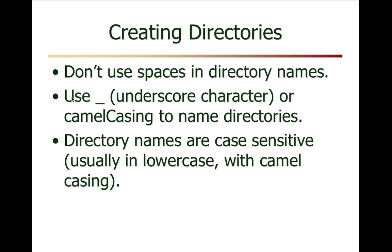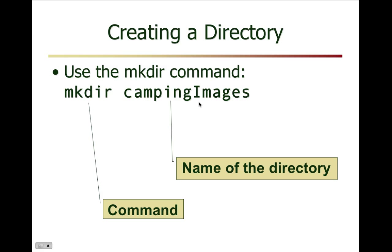Using an underscore or camel casing is recommended for directory names. Camel casing means capitalizing the first character of each new word — for example, 'my documents' becomes lowercase 'm', 'y', no space, but a capital 'D' in Documents. Directory names are case sensitive, usually lowercase with camel casing. An example is 'campingImages' with a capital I — that's the name of the directory.